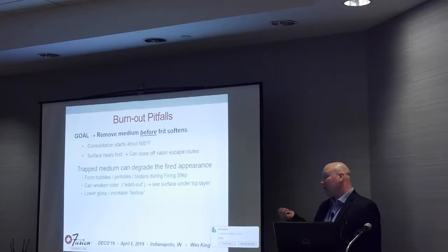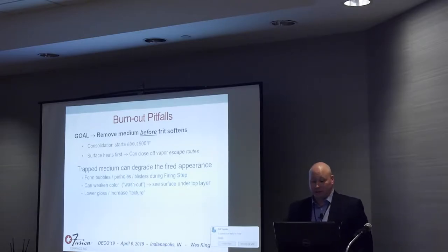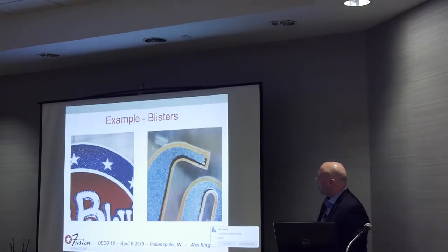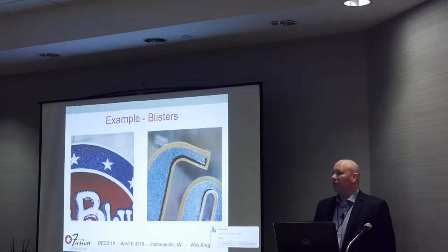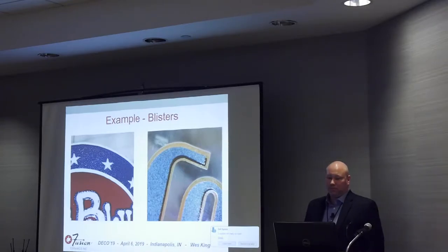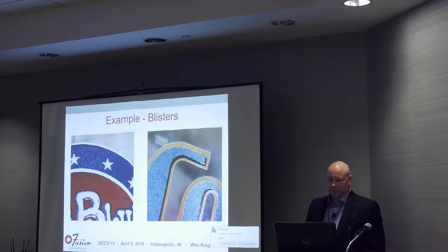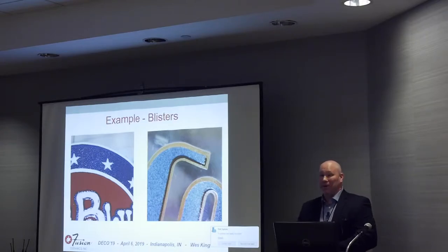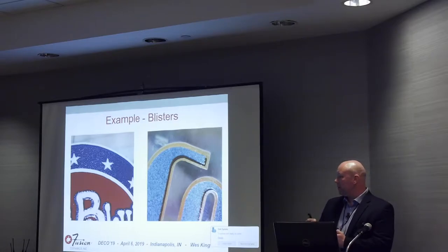Here are a couple of examples of blisters. In the one on the left, the blue layer printed on top of the white layer is blistered, while the white layer and red layer look pretty good. What happened is a failure to manage the burnout process—trapped medium, when it was able to escape, pushed against the molten glass and created blisters. You see this a lot with multi-layers, which makes sense—it's more complicated. You have to get everything burnt out of the lowest layer, the one in contact with the glass, before you start sealing off the escape routes in the top layer. It's managing that temperature difference that allows you to avoid this kind of problem.